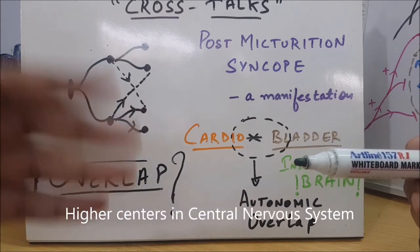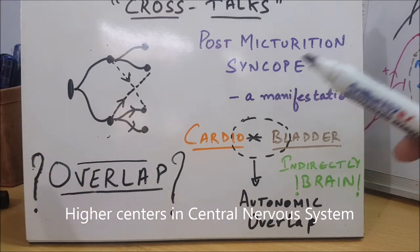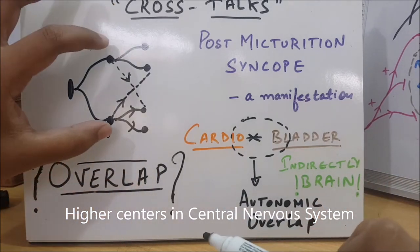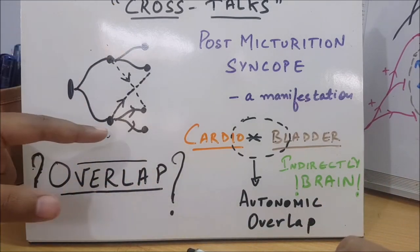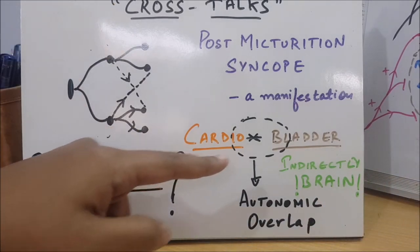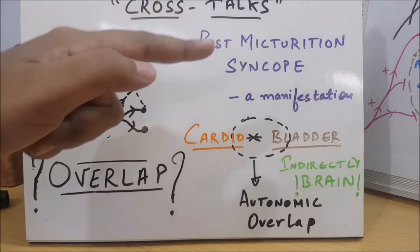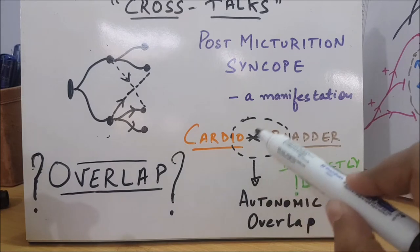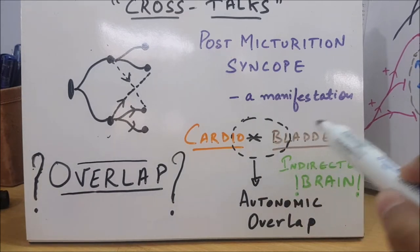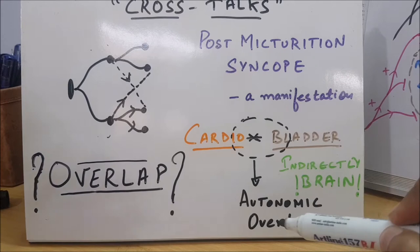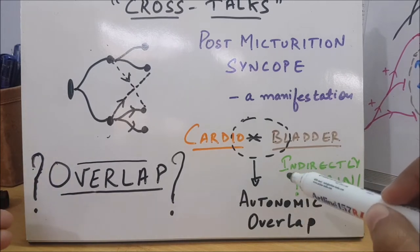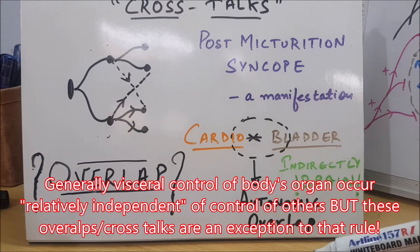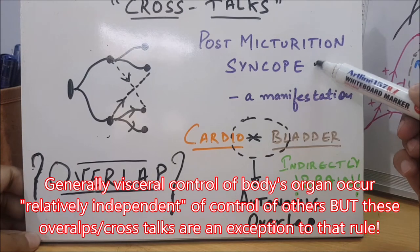This is a circuit, for example this is a cardiac circuit and this is a bladder circuit. We are seeing in post-micturition syncope an overlap between the cardio and bladder, or micturition system. Overlap of autonomic nervous system which indirectly affects the brain and hence we get this syncope.